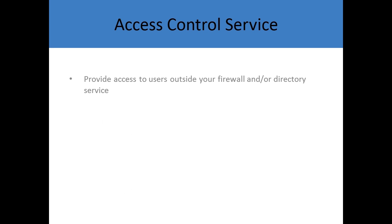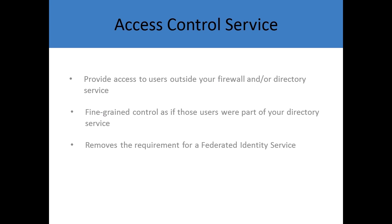The access control service provides users outside of your firewall and/or directory service the ability to still gain access as if they were your own internal users. You still get that fine-grained control as if they were part of your own directory service, and it removes the requirement for a federated identity service that you may have implemented in a previous solution. Overall, App Fabric allows much greater simplification to access any kind of cloud-based services from both inside and outside your organization.